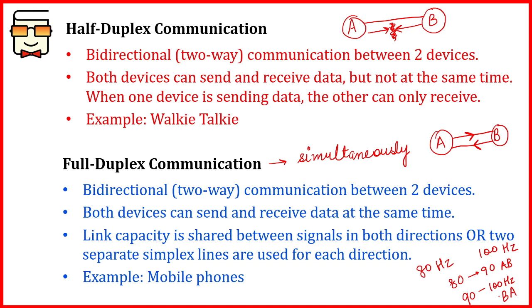So those were the three types of communications: simplex, half duplex, and full duplex. In the case of full duplex, the simplest example is a mobile phone — if you call someone and they are talking, you can also talk at the same time. The voice will clearly reach the other person, and in a video call as well, both parties' signals are reaching simultaneously. That's all for today's video. I hope you have understood all three types of communication. Thank you for watching — till we meet in the next video, mind your exam.